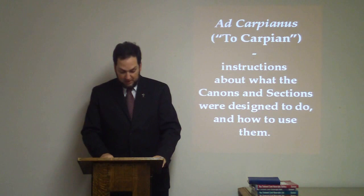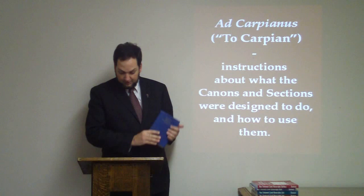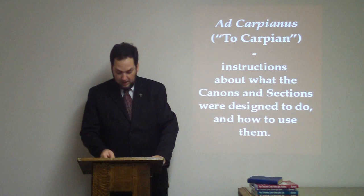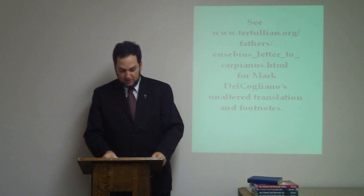Eusebius' letter to Carpian explains what the Eusebian Canons are for and how to use them. The Greek text of Eusebius' letter to Carpian can be found in Nestle-Aland, between the introduction and the beginning of Matthew. Mark de Cagliano has helpfully provided an English translation of Eusebius' letter, which can be accessed online as a public domain publication at Roger Pierce's tertullian.org website. With some paraphrasing and summarization, here is what Eusebius' letter says.